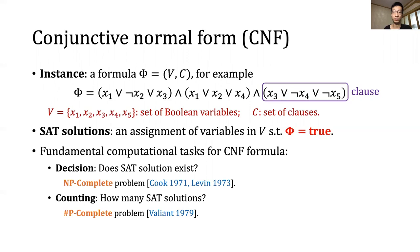Decision is to determine whether a solution exists. Counting is to estimate the number of solutions. Both problems are fundamental in computer science, one being NP-complete and the other being #P-complete.